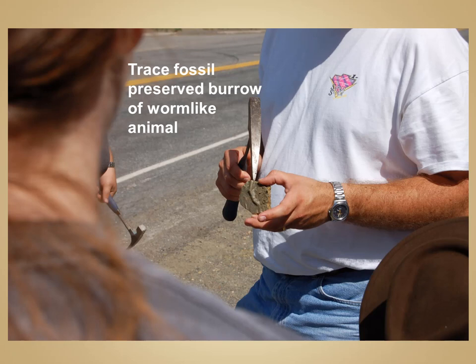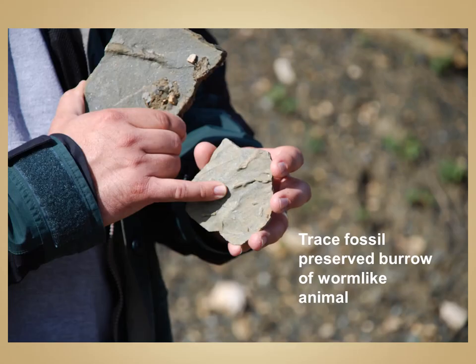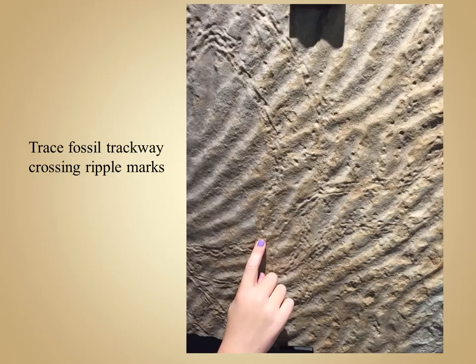Trace fossils can be more than just footprints. Here we see a trace fossil of a worm burrow, where a worm-like organism has burrowed through the sediment, which was later preserved — their burrow was left behind as a trace fossil. Trace fossils are often found in association with other sedimentary structures, such as the case here, where you can see a fossil trackway along with ripple marks.